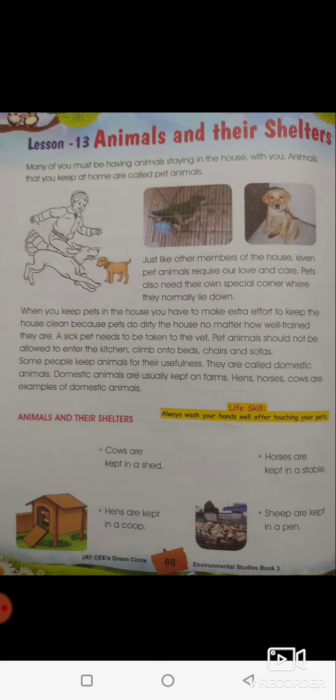We also learnt their shelters — different shelters. Cows are kept in a shed, horses are kept in a stable, hens are kept in a coop, and sheep are in a pen. Fishes are kept in an aquarium, dogs are kept in a kennel, and birds are kept in a cage.